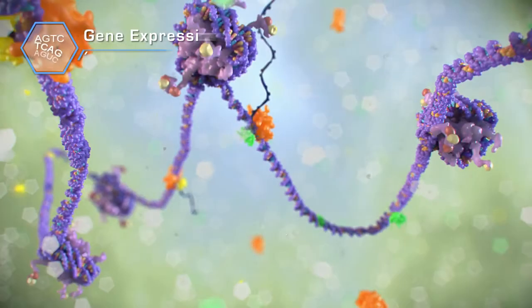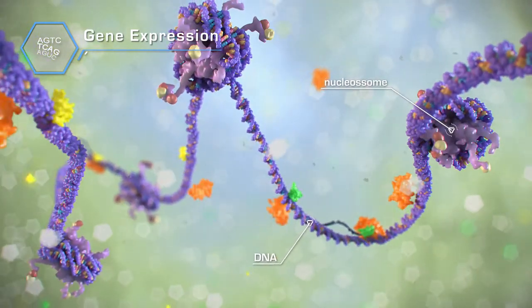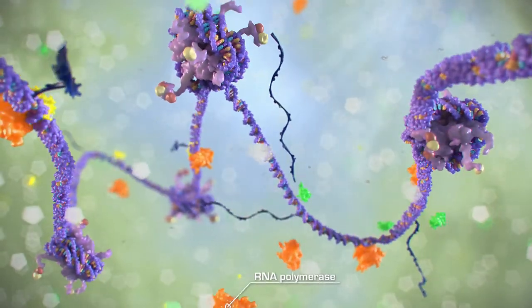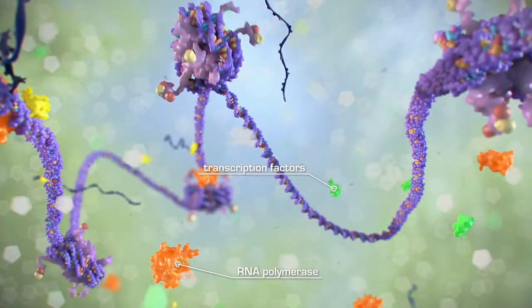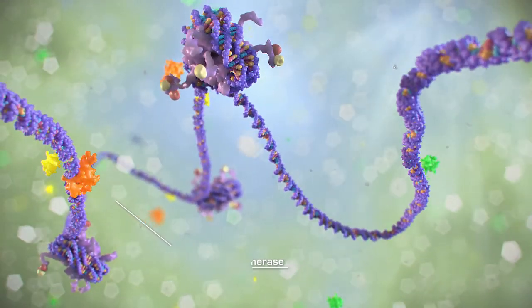The biological identity of a given cell largely depends on the genes that are actively used to produce the specific molecules that will achieve key functions. In embryonic stem cells, a cohort of transcription factors are specifically required to support the expression of specific genes.